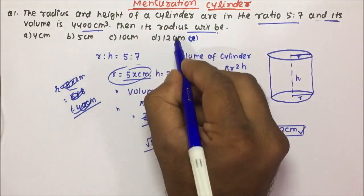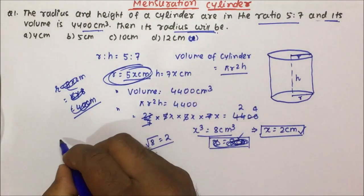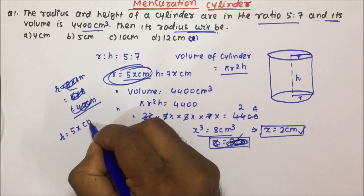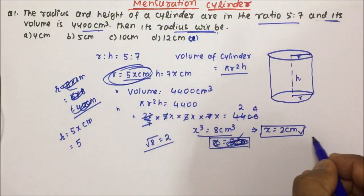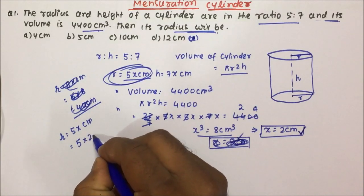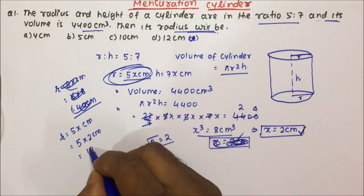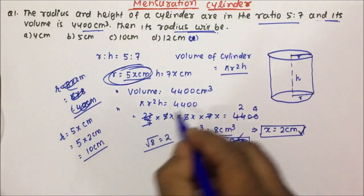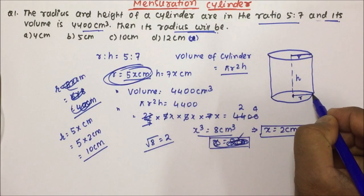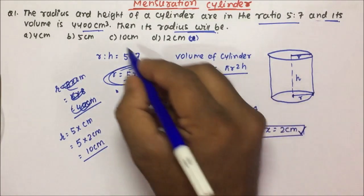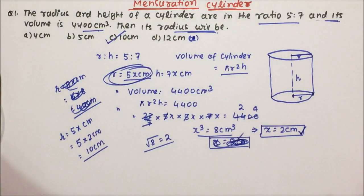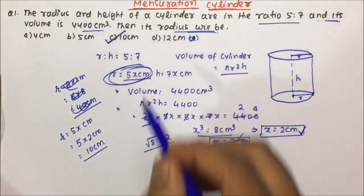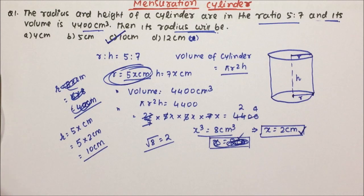What has been asked? The radius of the cylinder. Radius is nothing but 5x centimeter. The value of x which we got is 2 centimeter. So 5 into 2 centimeter, which is nothing but 10 centimeter. The radius of the cylinder will become equal to 10 centimeter, and you can see here option C for question number 1 is correct. This question we have easily solved. Only the formula — you should be able to keep that in mind — and then we will be easily able to solve with the basic concept.